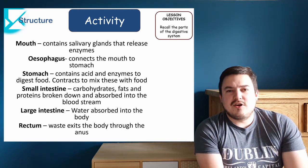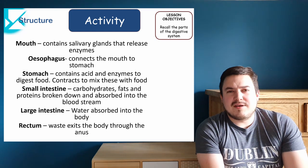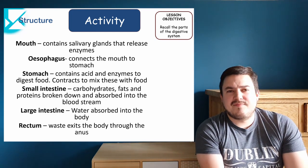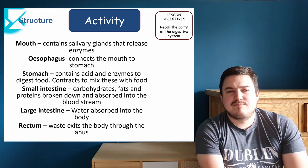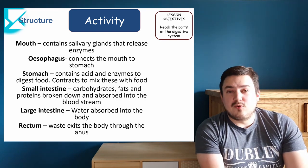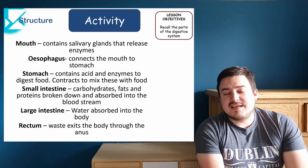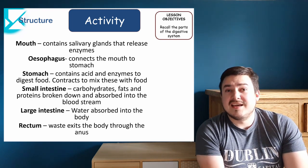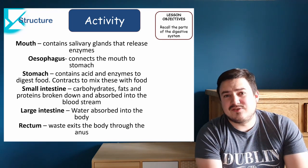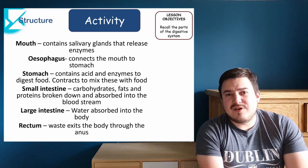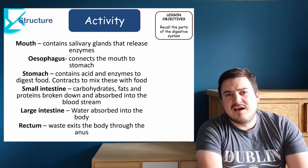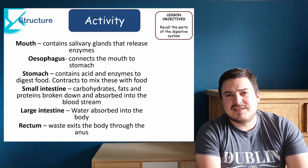In the small intestines, the food is broken down further and all the nutrients — particularly proteins, fats, and carbohydrates — diffuse through the walls of the small intestines into the bloodstream to be taken around the body. The small intestines have little hairs on them called villi, which increase the surface area and allow them to absorb more nutrients during this process.